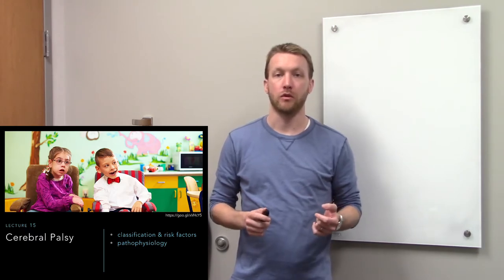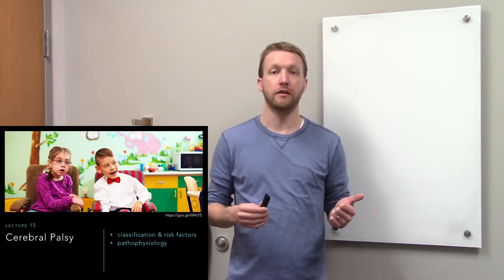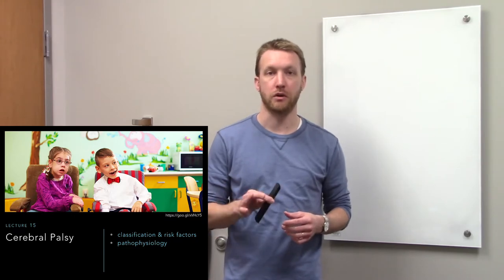Today's lecture is on cerebral palsy. Cerebral palsy is an umbrella term for damage to the nervous system that occurs early on in development, either in the womb or immediately after birth. Because this is an umbrella term, we're going to have a wide variety of symptoms that can occur with a variety of severities. We'll talk about the different classifications and risk factors in the first part, and then review the pathophysiology in the second part.